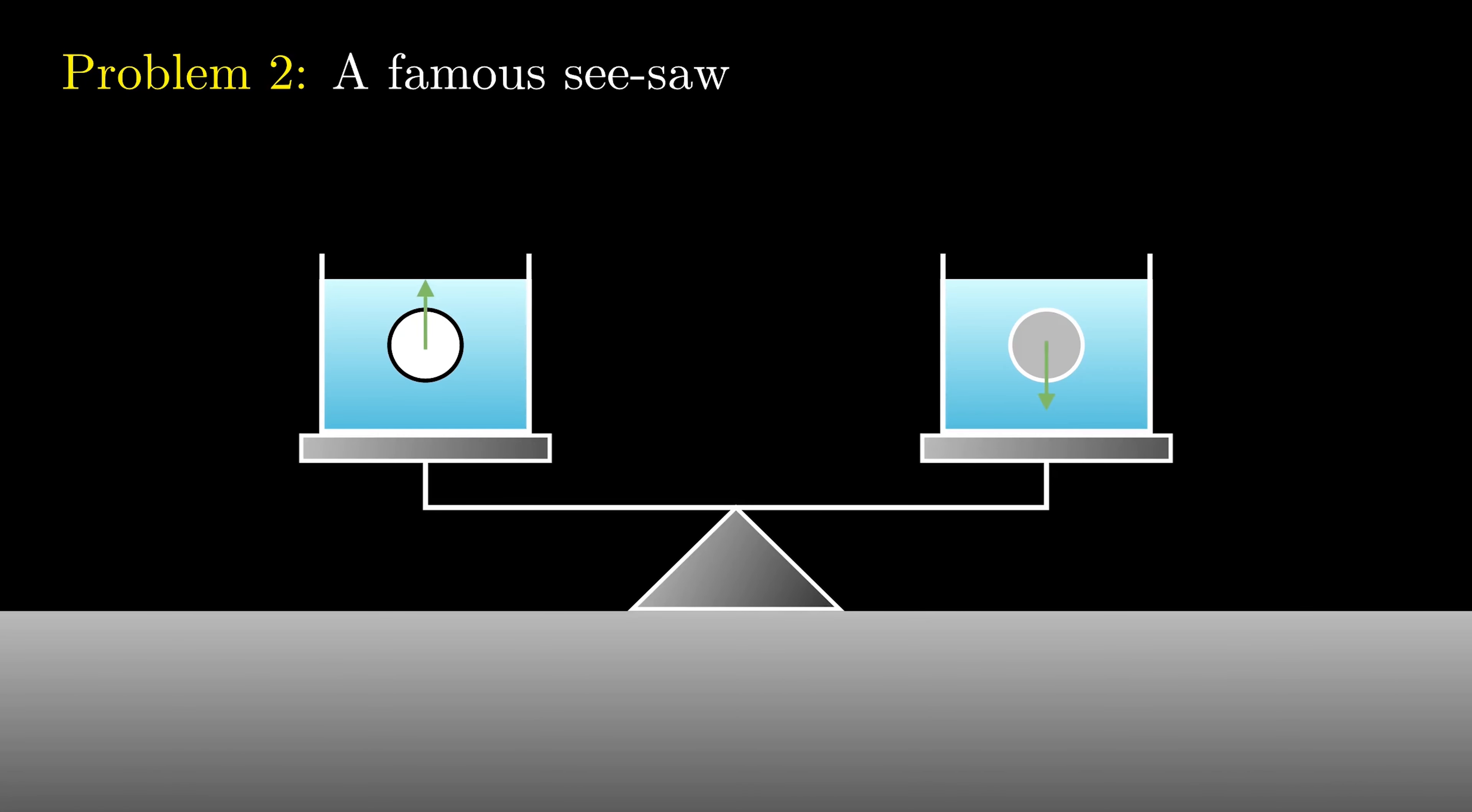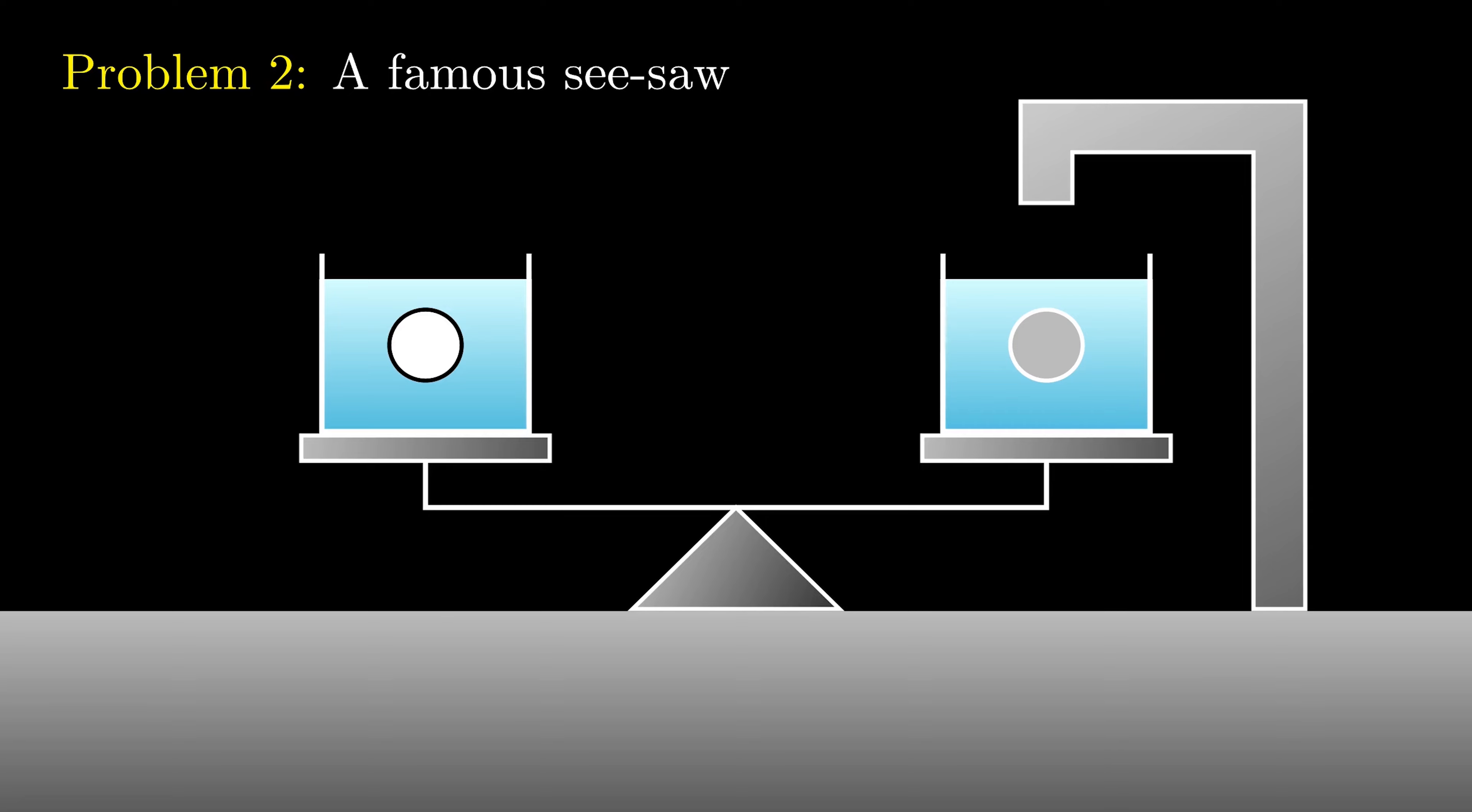Since the ping pong ball wants to float, and the rock wants to sink, we must hold them in place. We tie the ping pong ball to the floor and hang the rock from a stand.